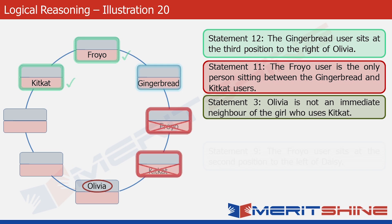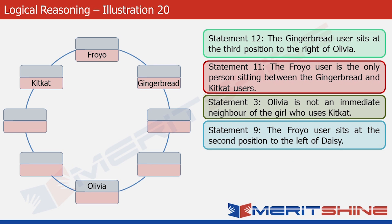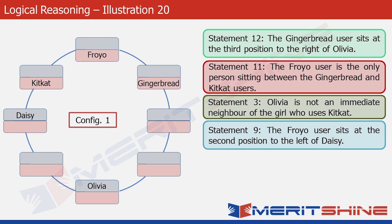Statement 9 tells us that the Froyo user sits at the second position to the left of Daisy. This is the Froyo user in the structure. If she is sitting at the second position to the left of Daisy, then Daisy must be sitting at the second position to the right of the Froyo user. So let's write Daisy here. This is where we stop and call this Configuration 1. We are doing this because we cannot find enough connected statements to place further data without creating multiple hard-to-handle cases. So we'll make another parallel configuration and then try merging the two — Configuration 1 and Configuration 2.